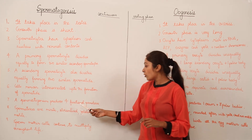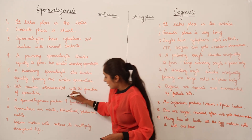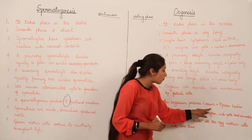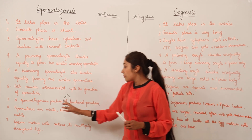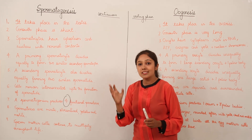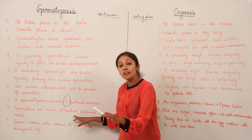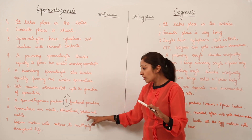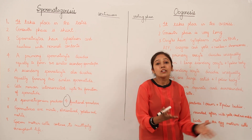A spermatogonium produces four functional spermatozoa, whereas an oogonium produces one ovum and three polar bodies which are non-functional. Spermatozoa are minute, streamlined, yolkless, and motile — they can swim and penetrate the ovum. Ova, by contrast, are larger in size, rounded, often contain yolk, and are non-motile.